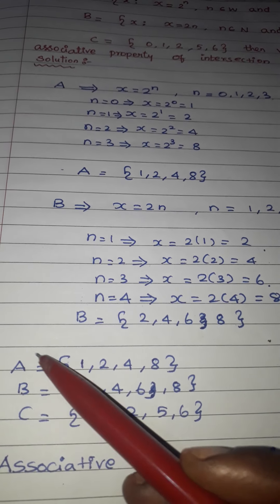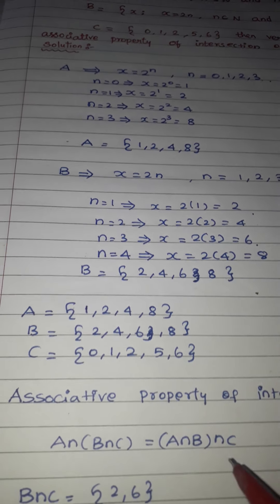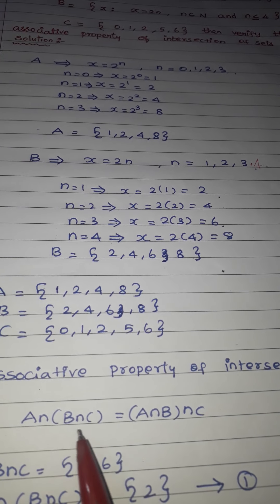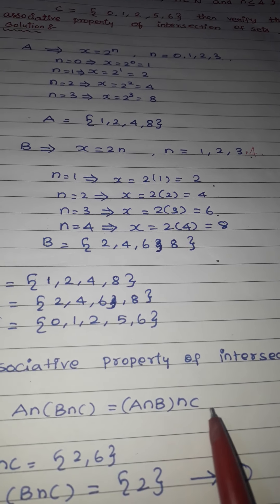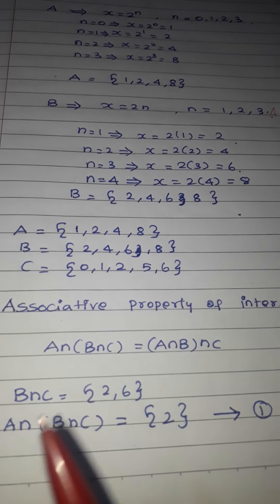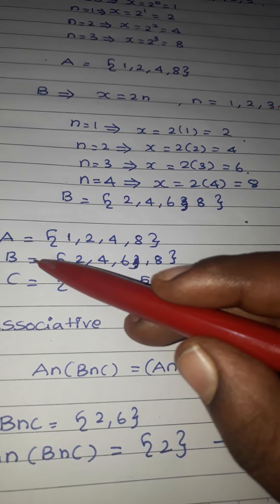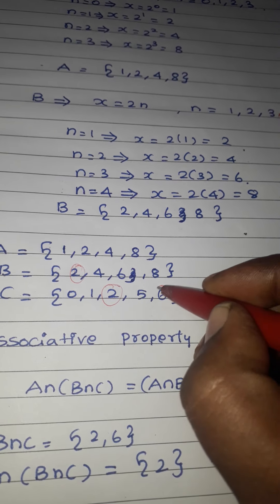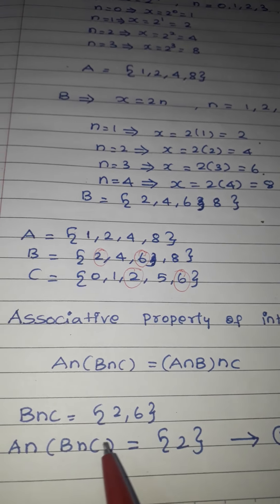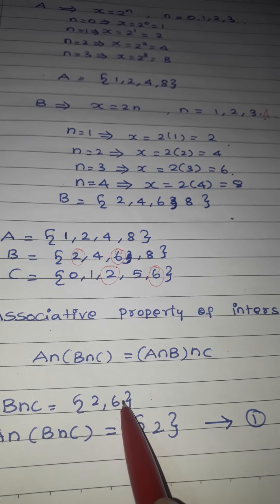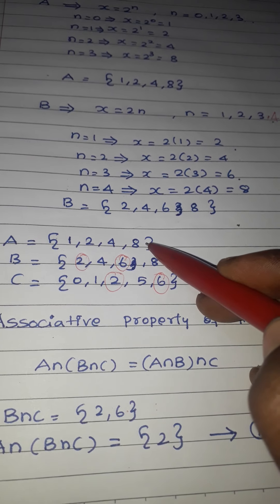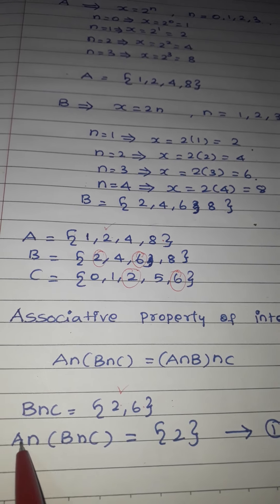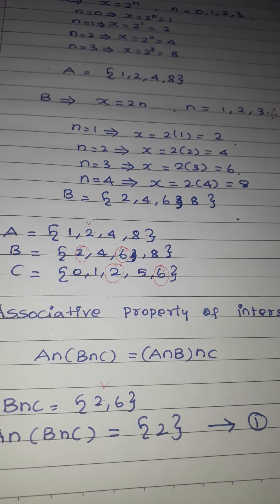Next, we find all three sets A, B, C. First find B intersection C: the common elements between B={2,4,6,8} and C={0,1,2,5,6} are 2 and 6. So B∩C = {2, 6}. Now A intersection (B∩C): common between A={1,2,4,8} and {2,6} is only 2. So A∩(B∩C) = {2}. This is equation 1.